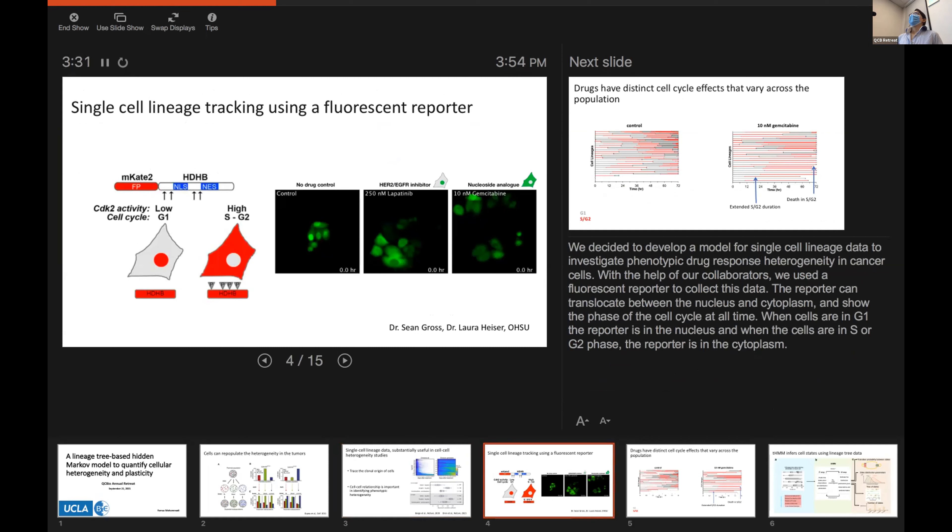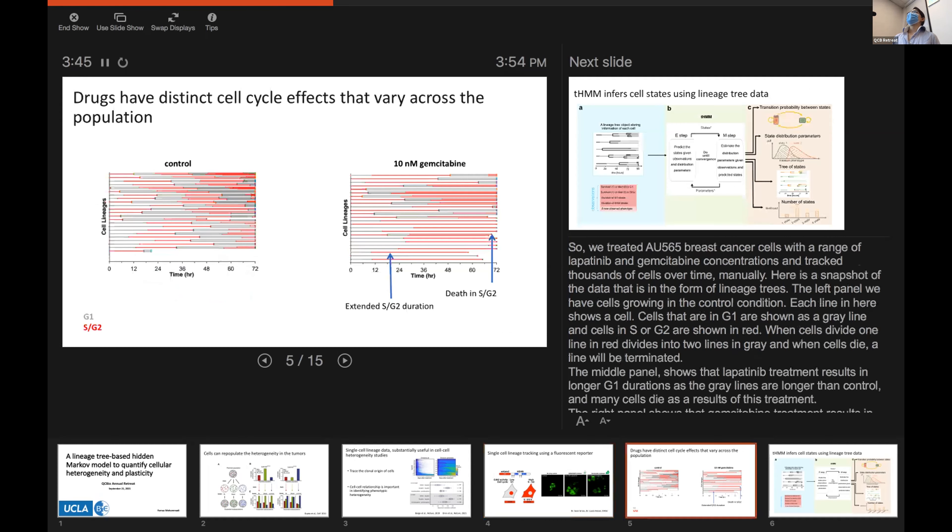So, in order to collect the data, we used a fluorescent reporter that could translocate between nucleus and cytoplasm and show the phase of the cells at each time. We treated AU565 breast cancer cells with a variety of anti-cancer compounds, and we tracked the single cells over time.